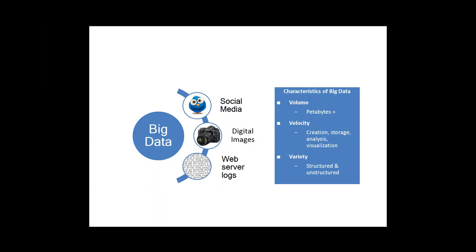With social media especially, that's a great example — we're talking about petabytes of data being generated every minute of every day, being transmitted very rapidly, which gets to velocity. These things are created immediately, they are stored, you do analysis, visualization — all of this stuff happens faster than you can blink your eye. That is another characteristic of big data. And there tends to be a great deal of variety in big data.